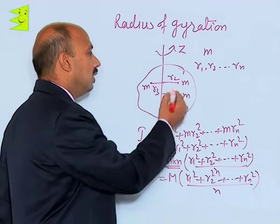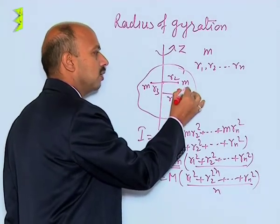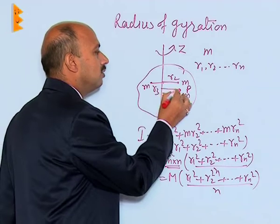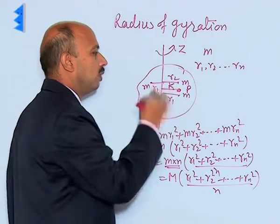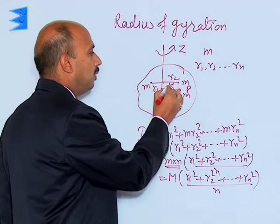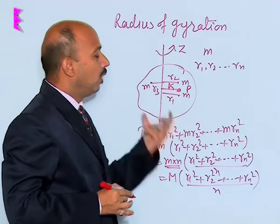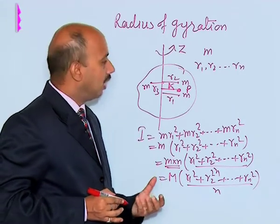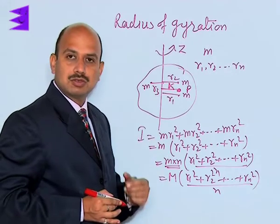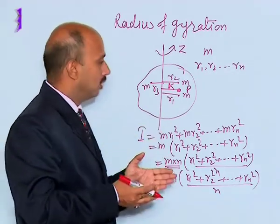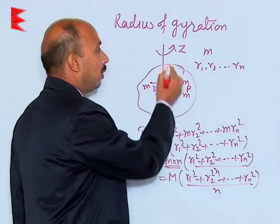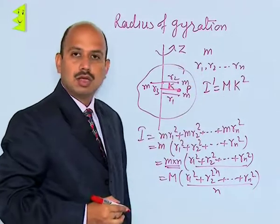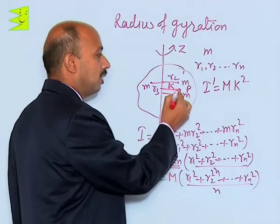Suppose there is a point P where the whole mass of the body is assumed to be concentrated, and this point is at a distance k from the axis of rotation. Take care here — this point P is assumed such that the entire mass of the body is concentrated there. So the moment of inertia of the whole body about this axis of rotation can be written as I' = M·k².